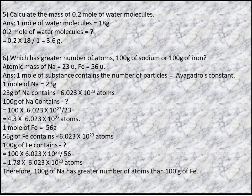Q5: Calculate the mass of 0.2 moles of water molecules. 1 mole of water = 18g. 0.2 moles = 0.2 × 18 = 3.6 grams.